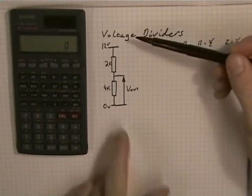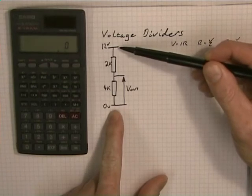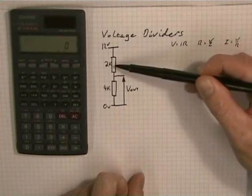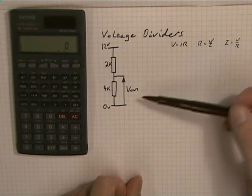Here we have a circuit. What we know about at the start is there's 12 volts between that point and that point. We know that resistance is 2k and that resistance is 4k. What we want to find is V out.